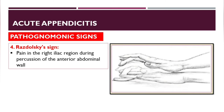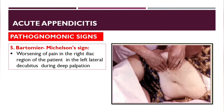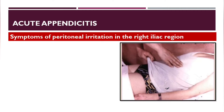Razdolsky's sign is pain in the right iliac region during percussion of the anterior abdominal wall. The Bartomier-Michelson sign: ask the patient to lie on the left lateral decubitus and perform deep palpation — there will be worsening of pain in the right iliac region. Sitkovsky's sign: appearance or worsening of pain in the right iliac region when changing position from supine to lateral decubitus.